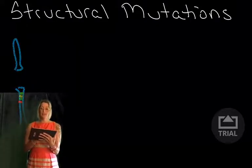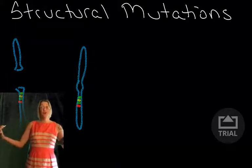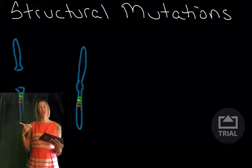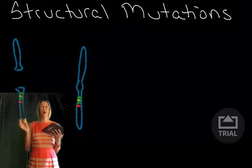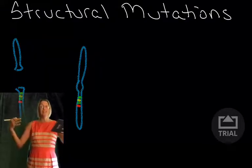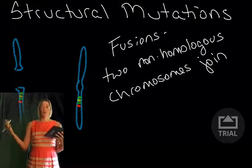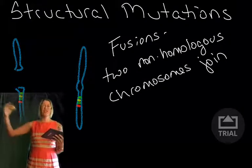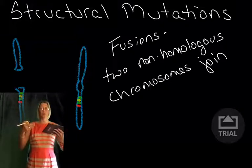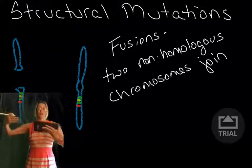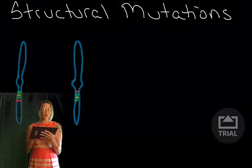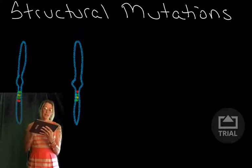Then of course you have the opposite: fusions, where you have two chromosomes, they started out as two, they fuse, and now you have a single chromosome. We see this in our evolutionary history when our branch diverged from that of the other great apes. They have more chromosomes than we do. If we study the structure and the genetic code of those chromosomes, we see that two chromosomes that our common ancestor had fused in our lineage, and in the other great ape lineage those chromosomes did not fuse.